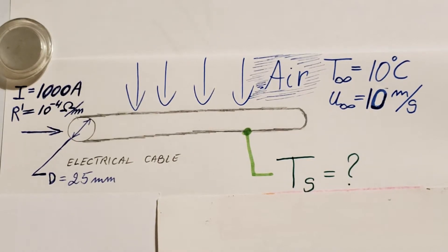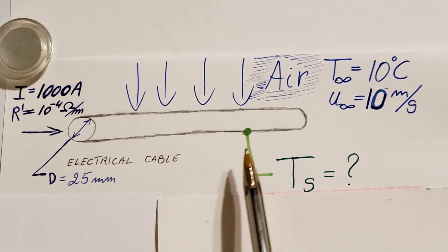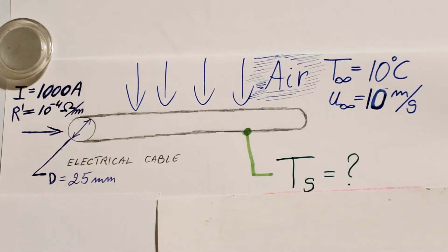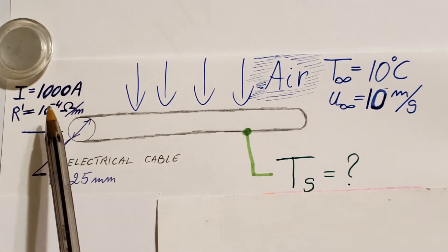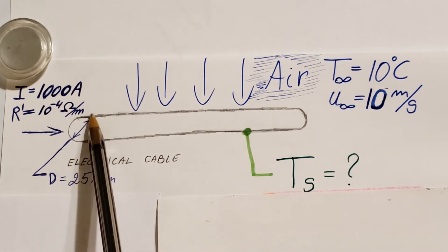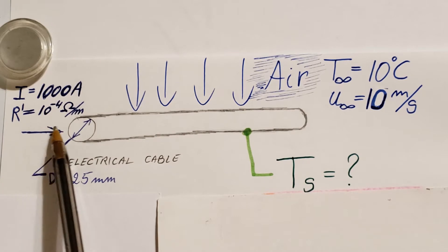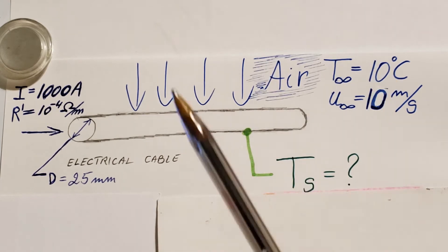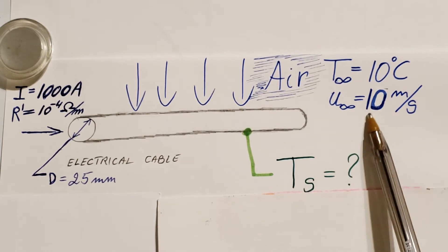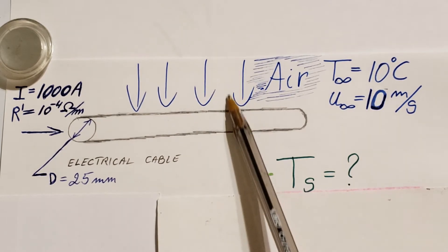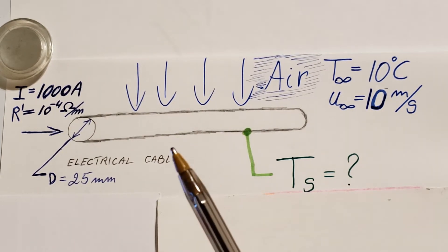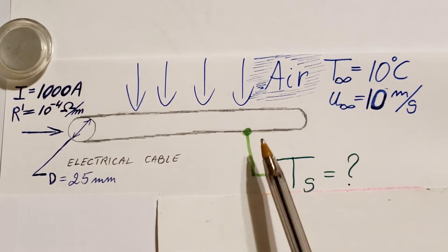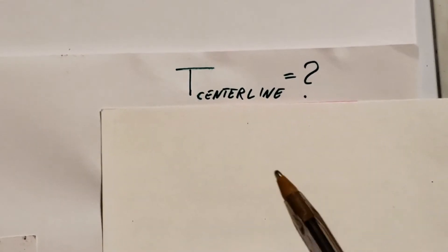This is a heat transfer problem dealing with a 25 millimeter diameter high-tension electrical cable that has a resistance of 10 to the negative 4 ohm-meters. A current of 1000 amps passes through it. The surrounding air is at 10 degrees Celsius, and the air velocity in cross-flow is 10 meters per second. We need to find the surface temperature and the centerline temperature of the wire.